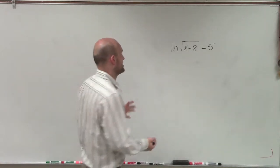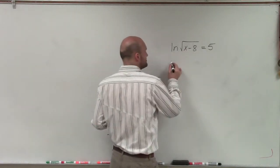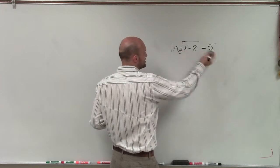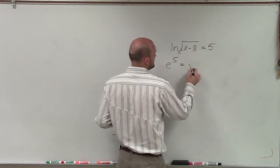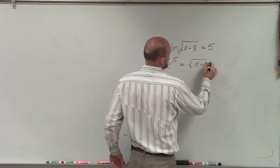We automatically know that we have a natural logarithm here. So I could just go ahead and rewrite this in exponential form. So it would be e to the fifth equals the square root of x minus 8.